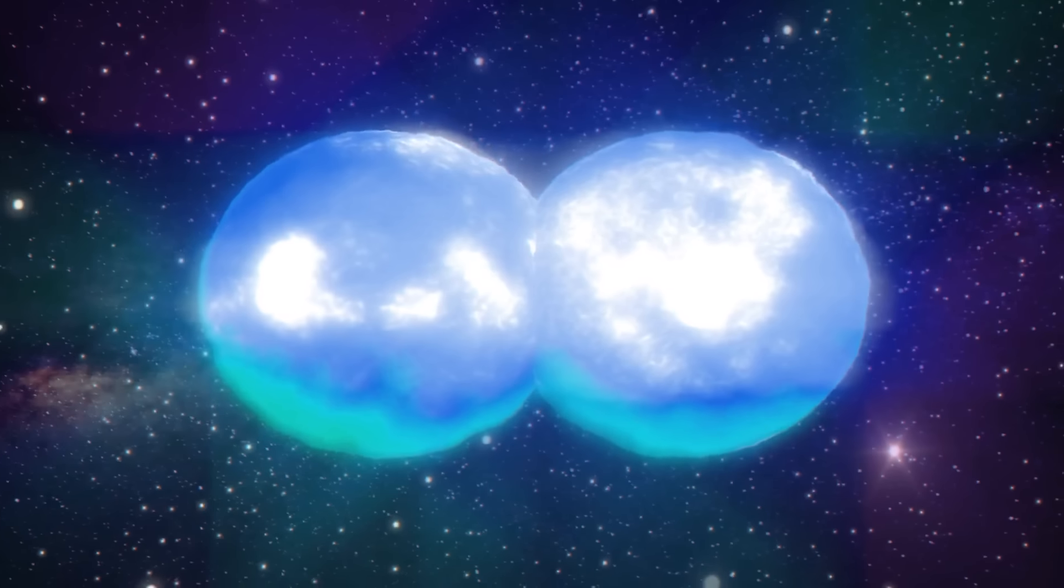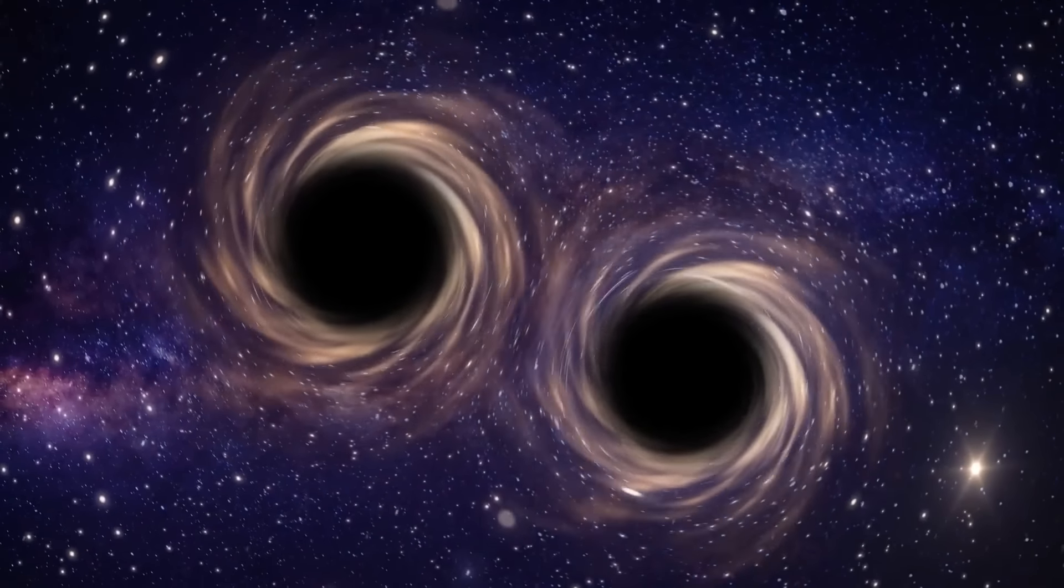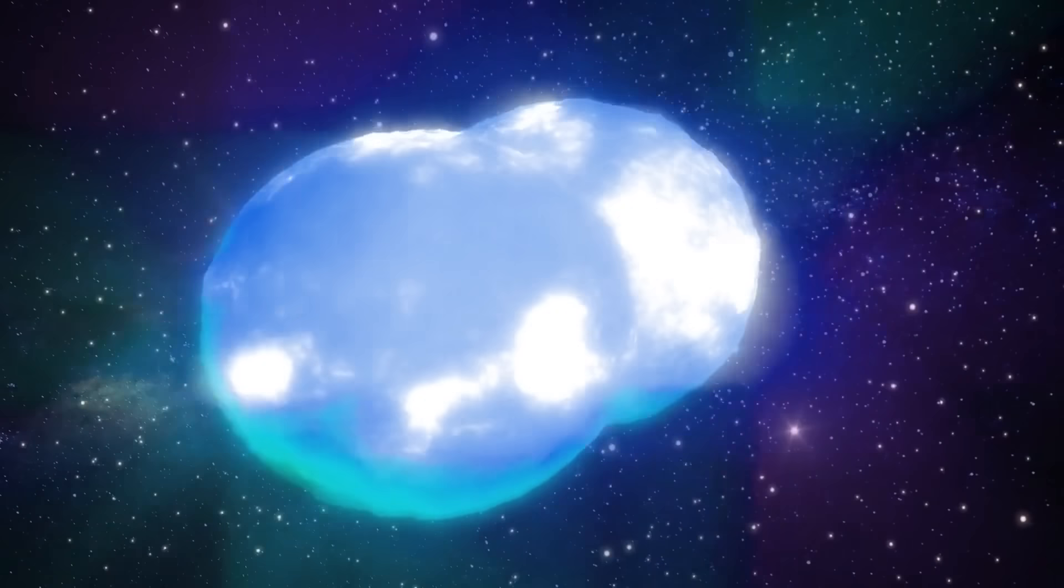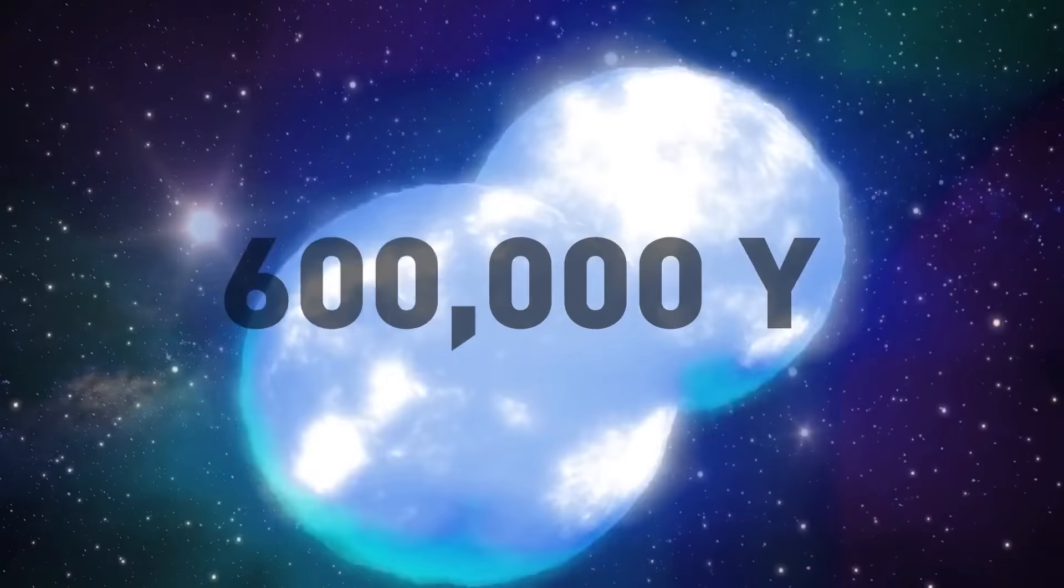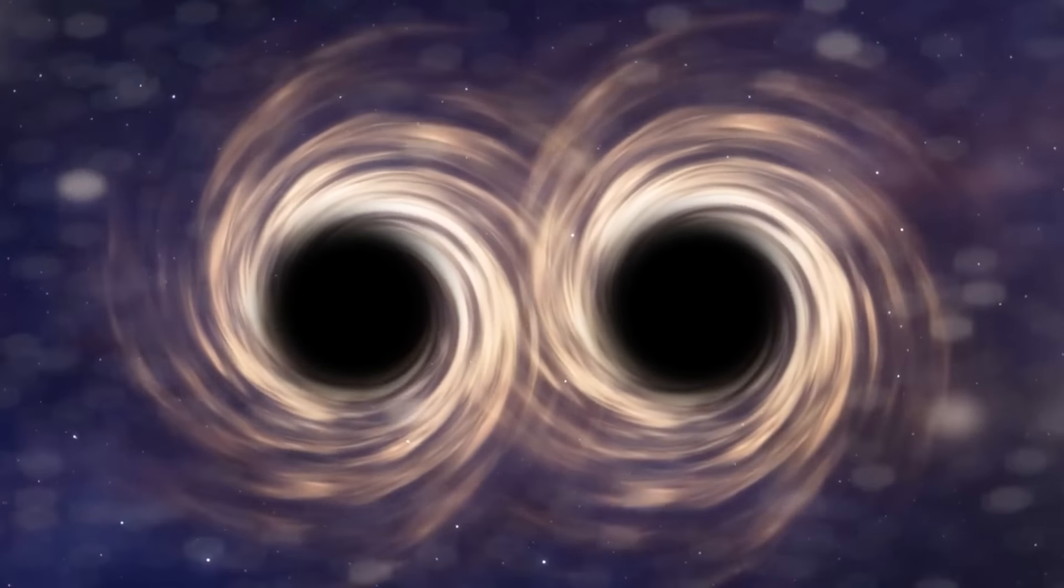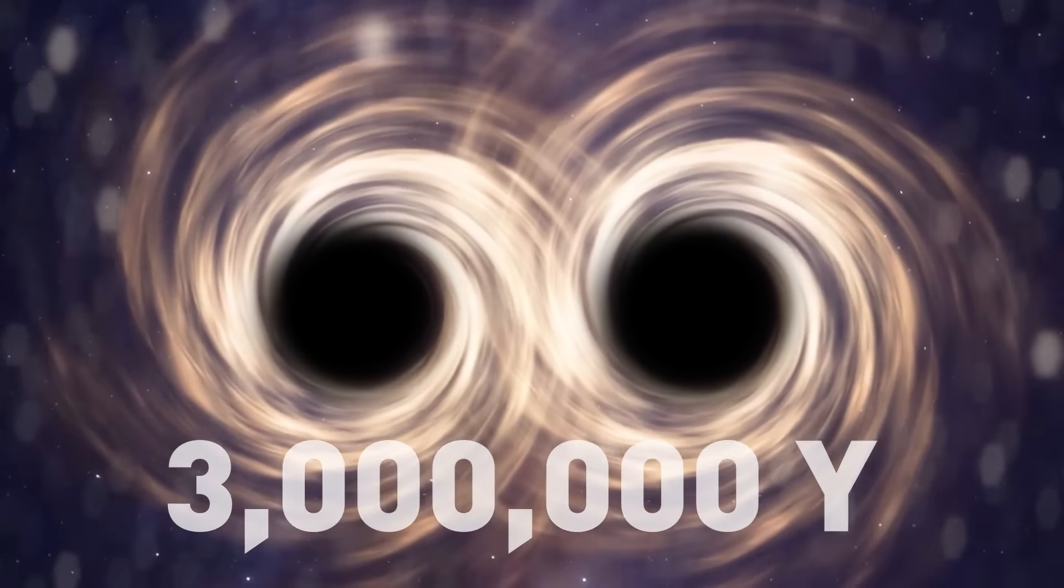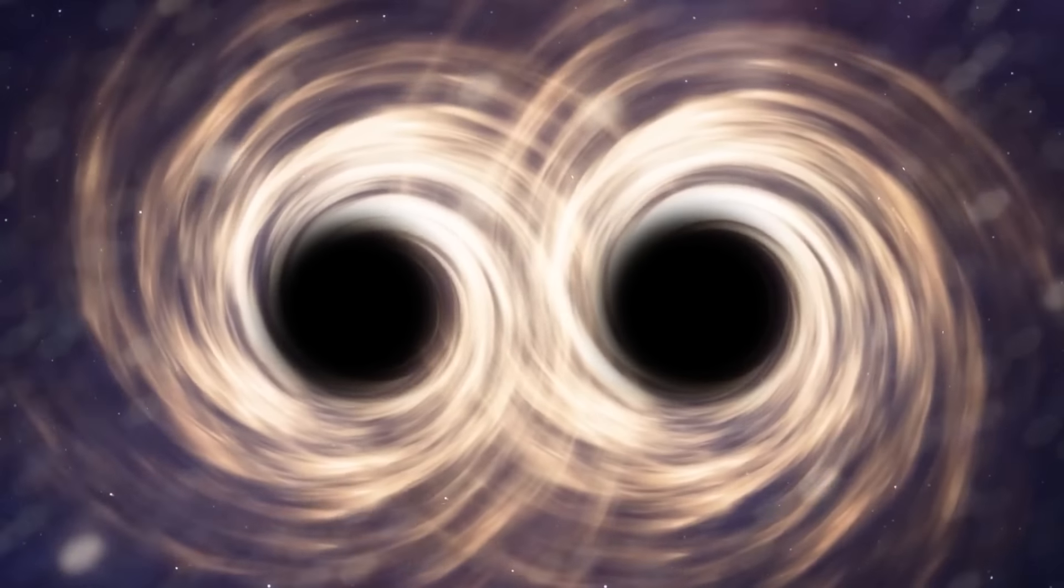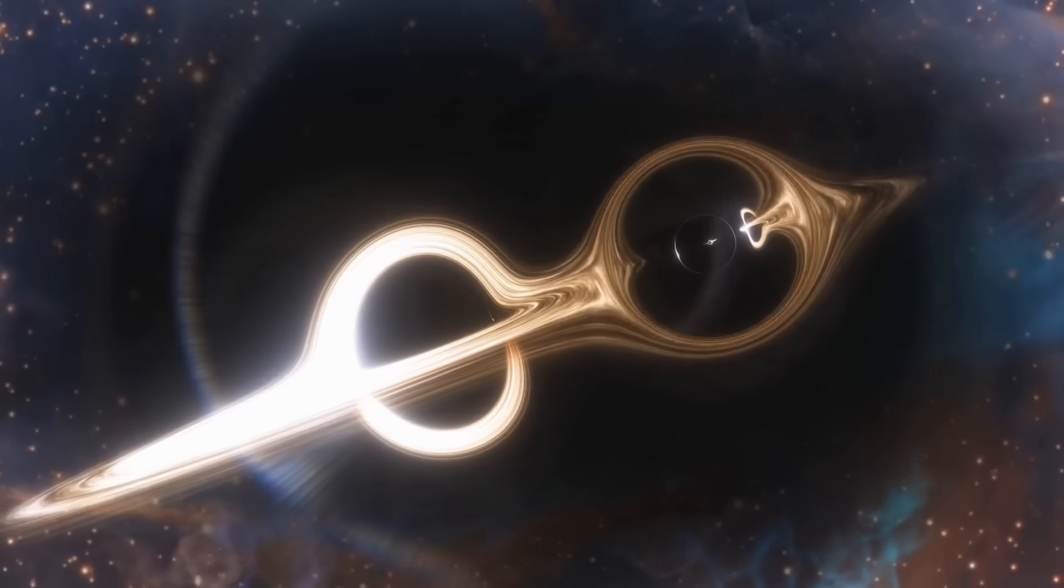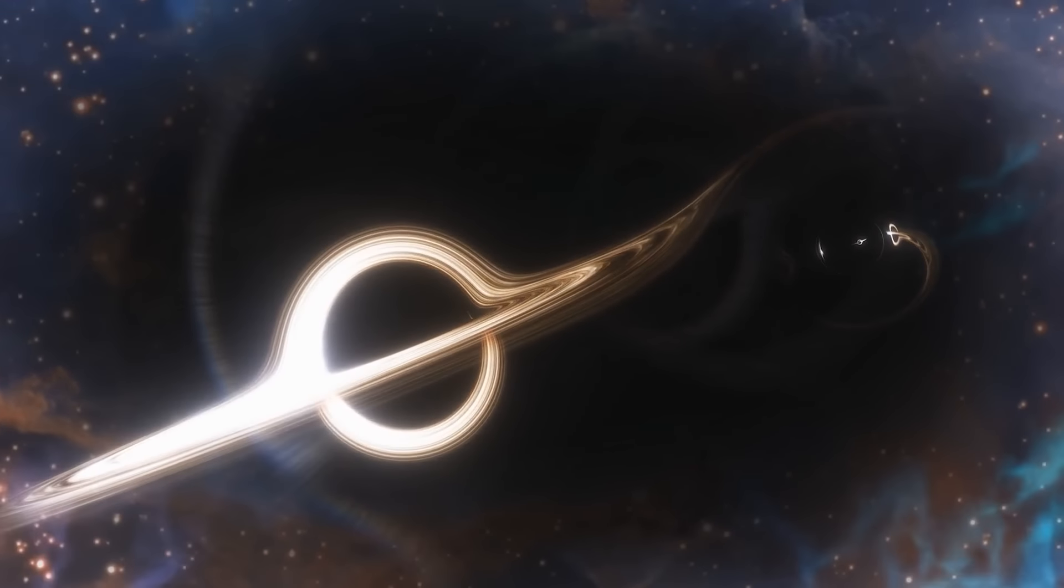If they merge, this process would probably take around 600,000 years. While if they become binary black holes, they could continue burning for another 3 million years. But both scenarios would ultimately lead to their destruction. Unless the stars could end up as two separate black holes drifting away from each other through the vastness of space, there's a possibility for that to happen too.